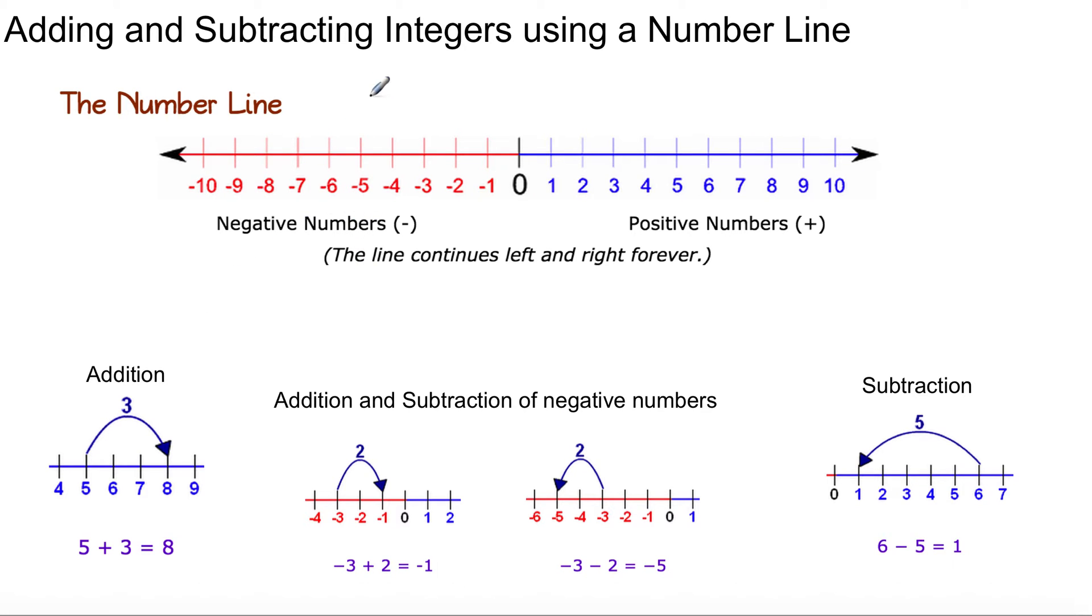Negative numbers go to the left, and your positive numbers go to the right. The line continues left and right forever. An example with this would be 5 plus 3 equals 8. So 5 plus 3 will get you to 8. We're going right, we're moving positive, we're going right.